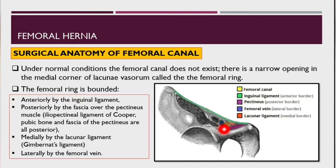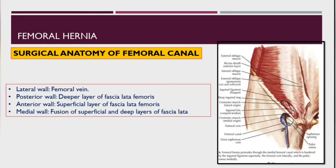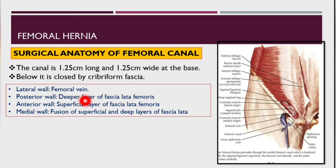Medially there is the lacunar ligament or Gimbernat's ligament, and laterally there is the femoral vein. I'm talking about the femoral ring because under normal circumstances the canal is not there. If there is any protrusion through this femoral ring, it will be transformed into a femoral canal. The canal is 1.25 centimeters — up to three centimeters long — and 1.25 centimeters wide. Below, it is closed by the cribriform fascia.